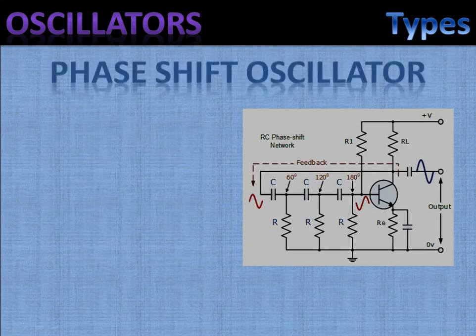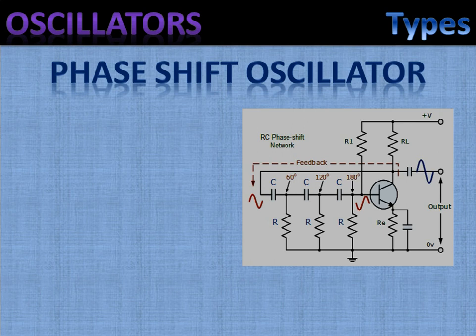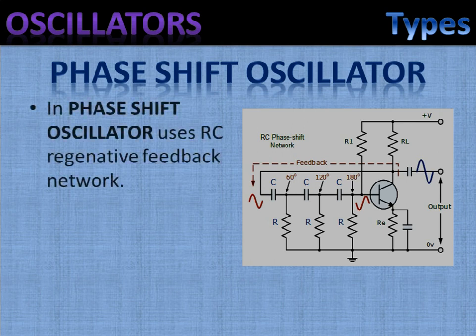Next we study about phase shift oscillator. The RC oscillator, which is also called as phase shift oscillator, produces a sine wave output signal using regenerative feedback from the resistor-capacitor combination instead of LC tank circuit. It relies on the leading or lagging RC network, but the same network causes attenuation. Therefore the amplifier has to overcome this attenuation in order to provide sustained oscillations.